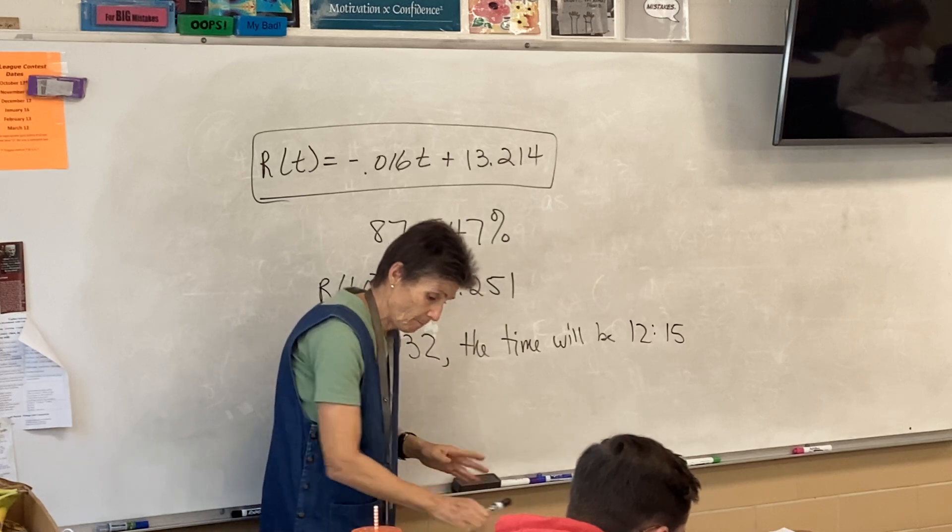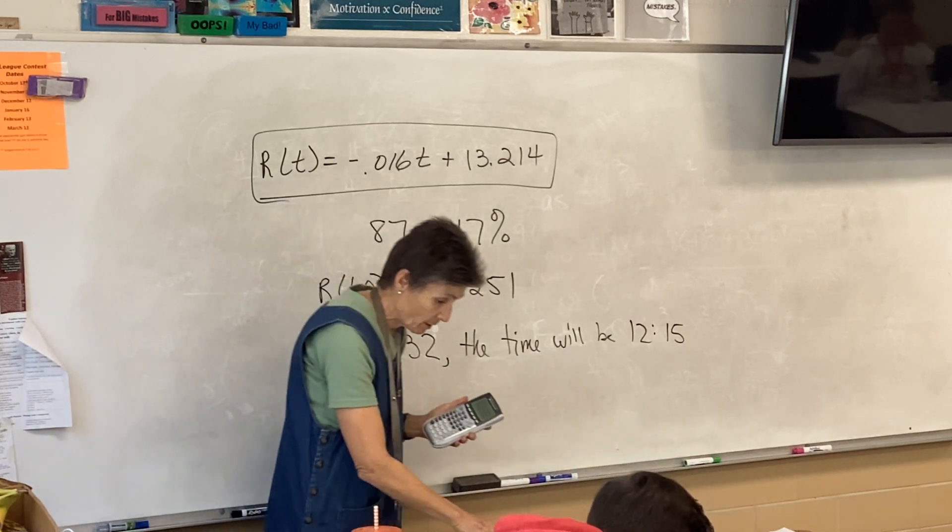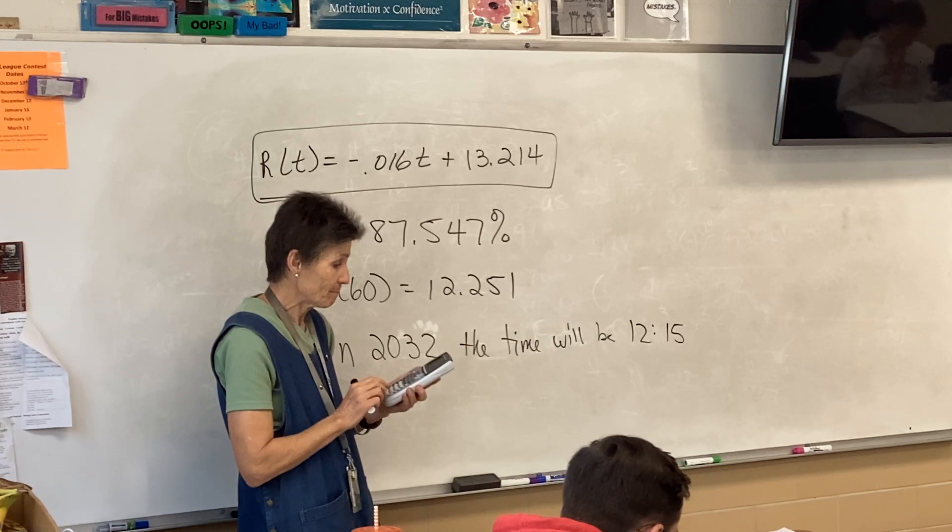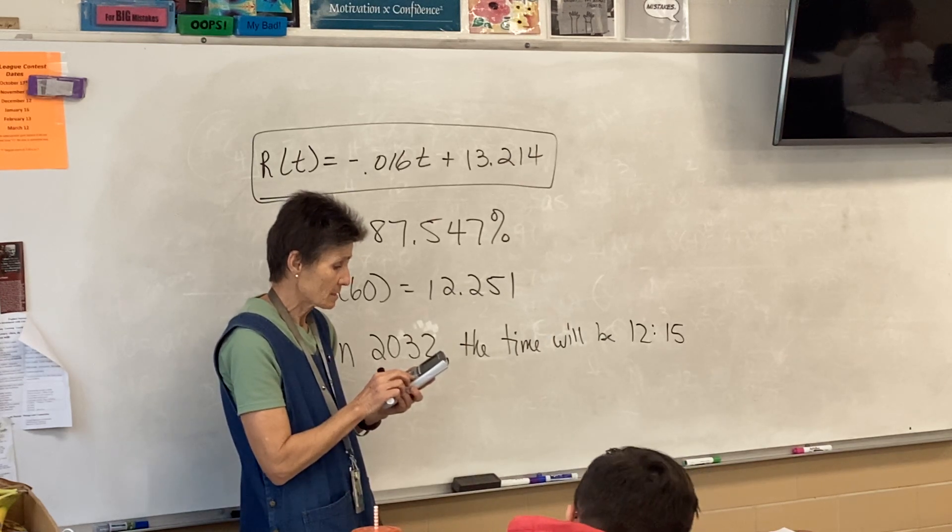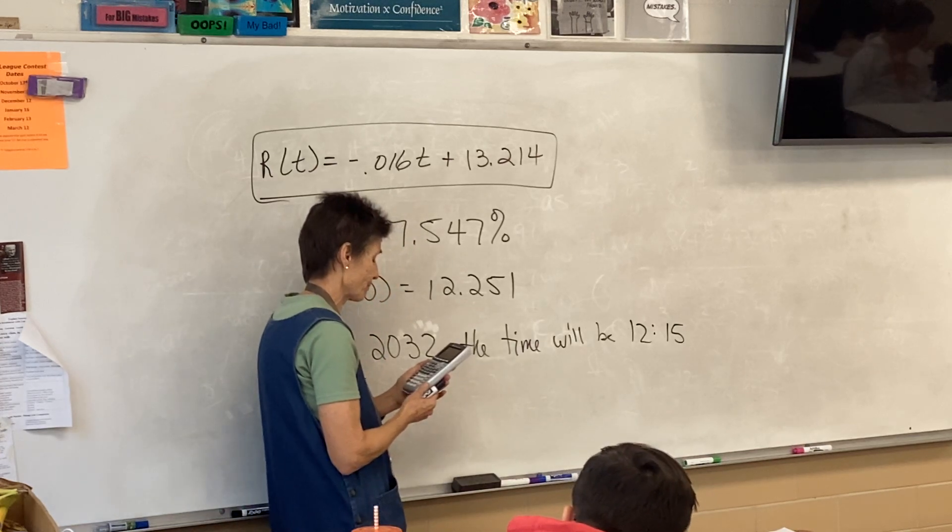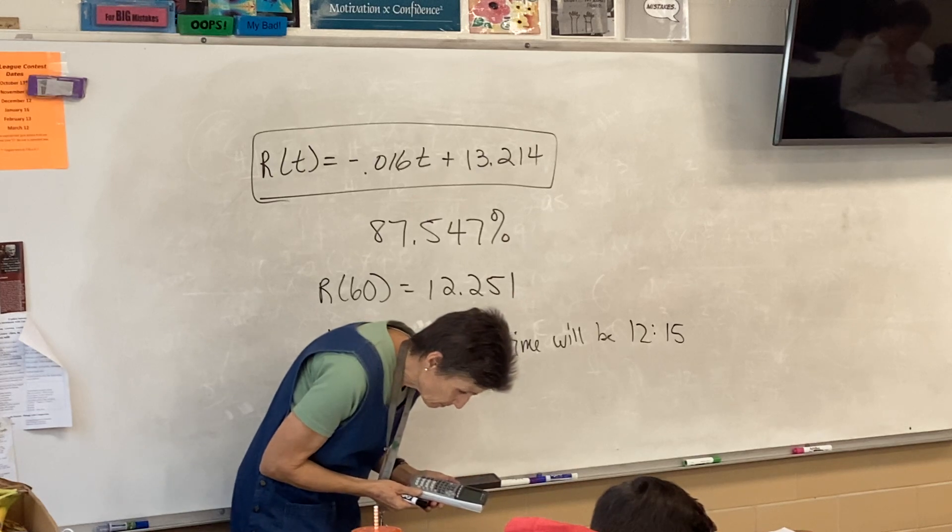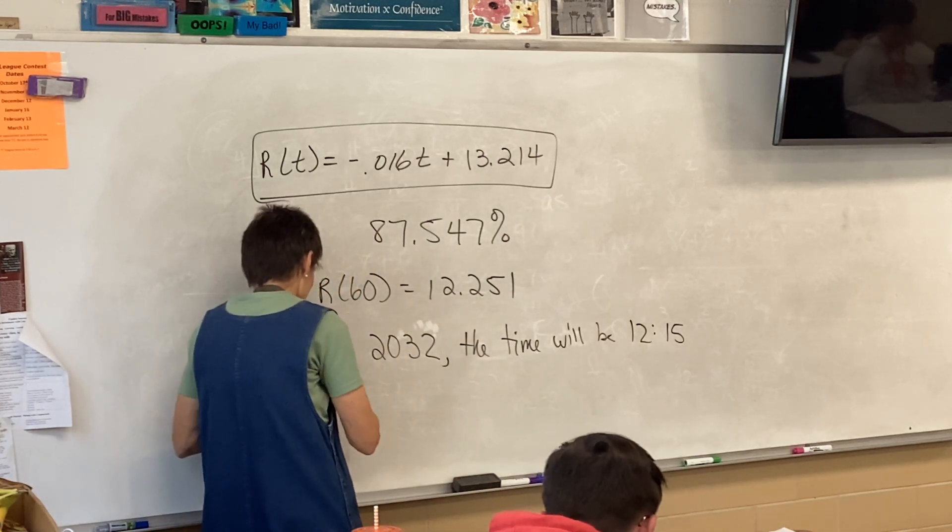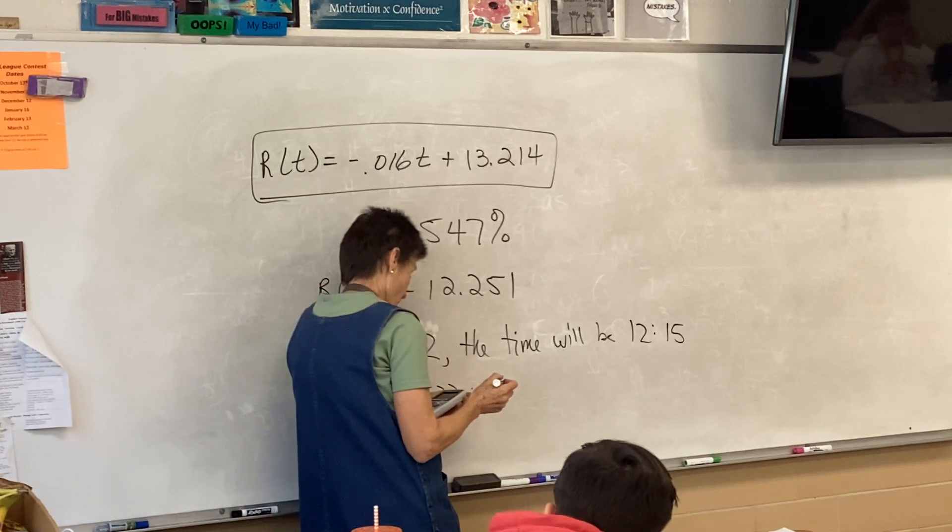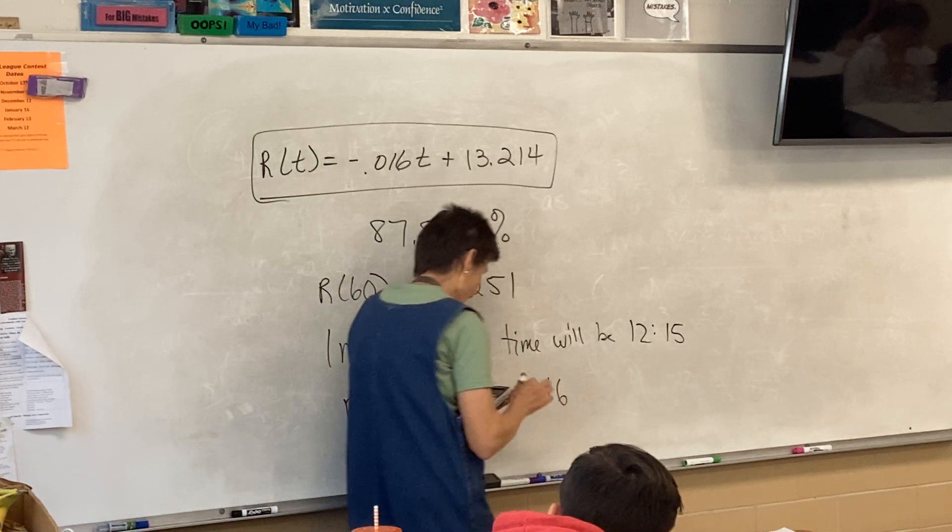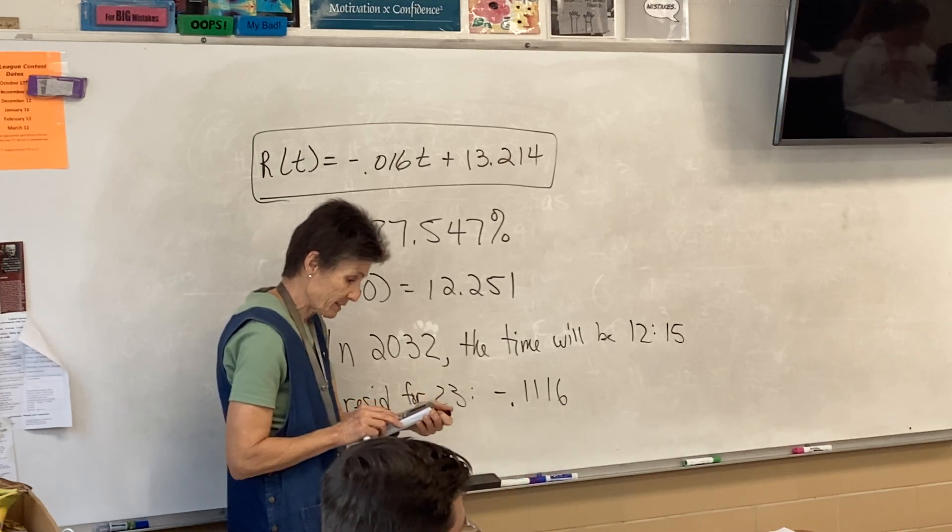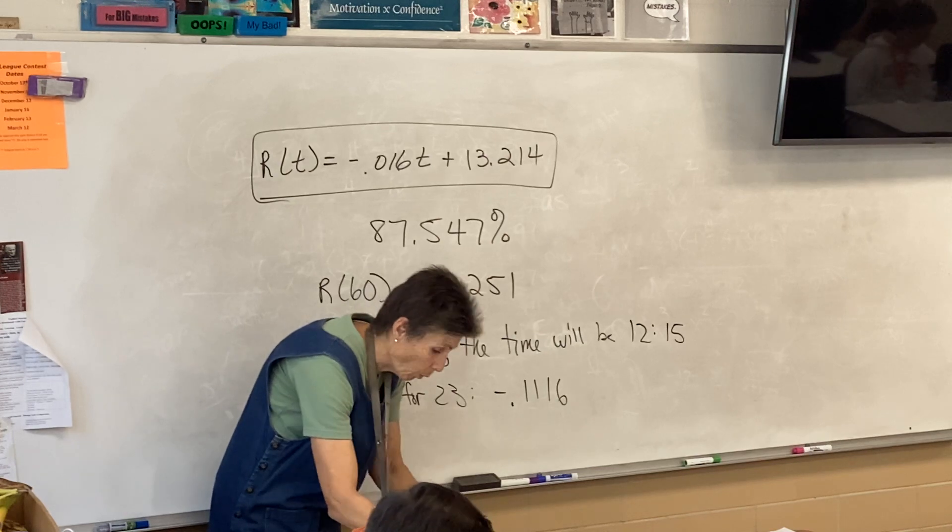All right. What is the residual for R of 23? Now, 23 is in your table, right? So, there's no need to calculate this by hand. Go back to stat edit. And go across to your residual. And what is the residual for 23. What did you come up with in your chart? The residual for 23. I got negative 0.1116 if I'm looking at the right number. I got to double check. I'm looking at the right number. Yeah. Anybody else get that?